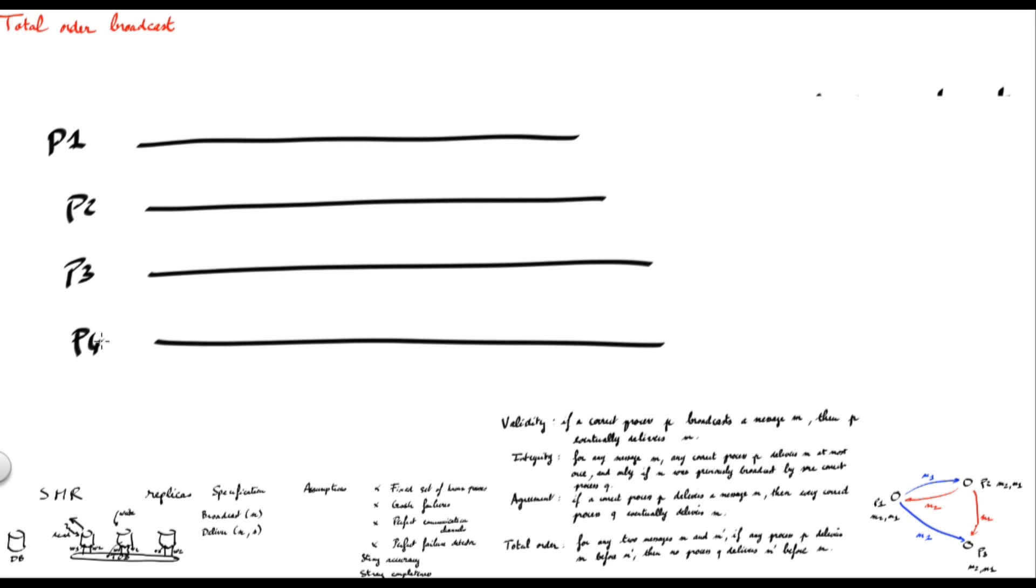So to explain you this protocol, let me take the example of a system with four processes. Using their perfect failure detectors, processes can easily elect a process called sequencer. So in this example, I assume that P1 is the sequencer process. Whenever a process wants to broadcast a message, it sends that message to the sequencer. The sequencer will rebroadcast the message together with a sequence number. Processes use this sequence number to guarantee that they all deliver the same messages in the same order.